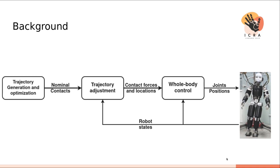Our story begins with the usual three-layered locomotion architecture for humanoid robots in which the first layer generates nominal contacts. The trajectory adjustment layer modifies these contacts and other references based on the current robot's states and passes it to a whole-body control layer which generates the desired joint positions, velocities, or torques based on the robot's low-level control architecture.